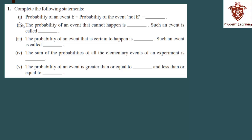Let us see the very first question of the NCERT Exercise 15.1 for the chapter Probability. The question says: complete the following statements. In the first section we have: probability of an event E plus probability of the event not E is equal to — and the answer is 1.